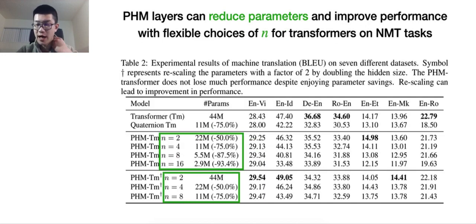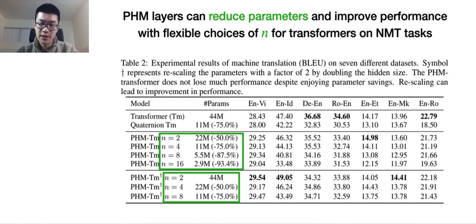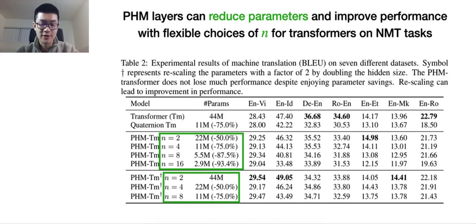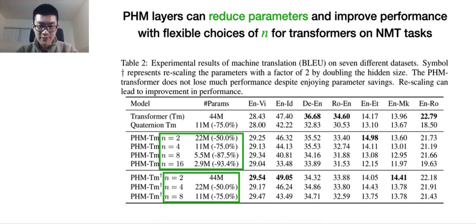For the Transformer model, we first evaluate on neural machine translation tasks. We observe similar results: increasing hyperparameter N yields more parameter saving while further improving performance. Additionally, on the bottom three rows, we double the hidden size — rescaling with a factor of two — and then reduce parameters by replacing fully-connected layers with PHM layers. This yields even more effective representations, allowing us to further improve performance.